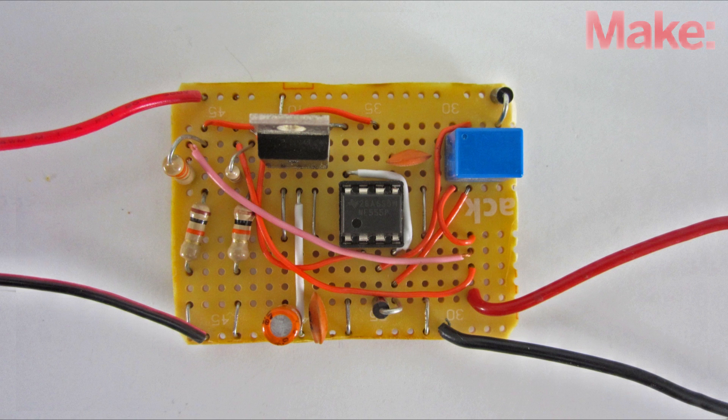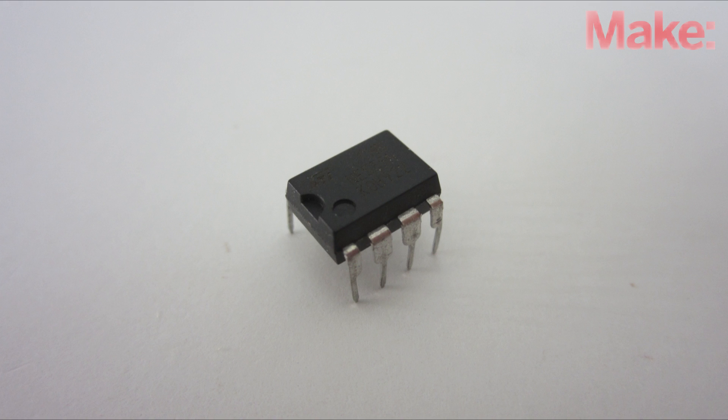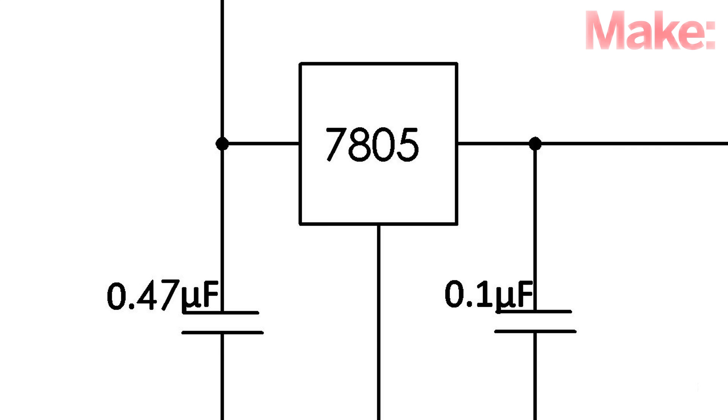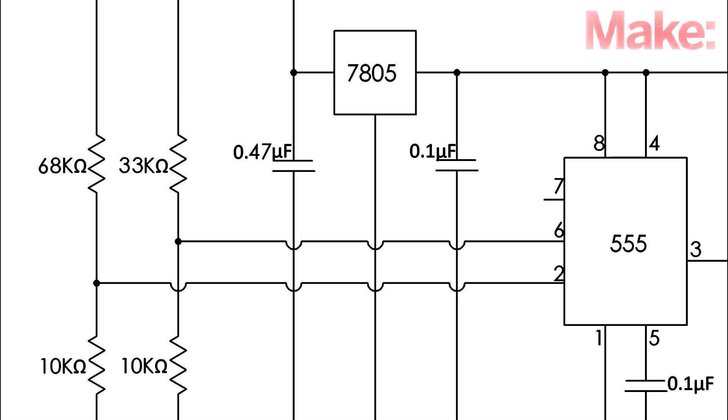Now you need a charge controller. I decided to build one using a 555 timer IC. Here's the overall circuit. The circuit is powered by the panel through a 5 volt voltage regulator. The battery is connected to two voltage dividers and the output of these is sent to pins 2 and 6 on the chip.